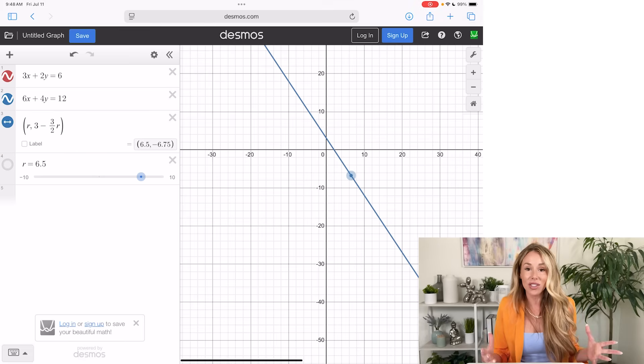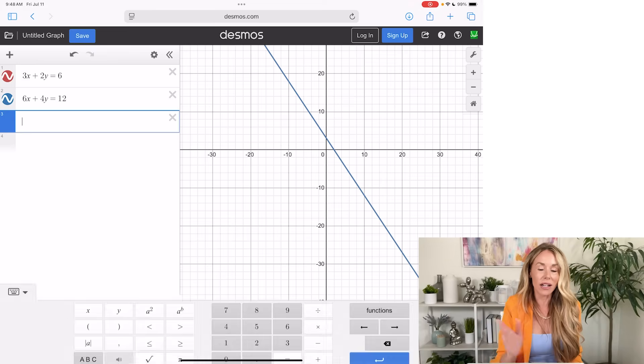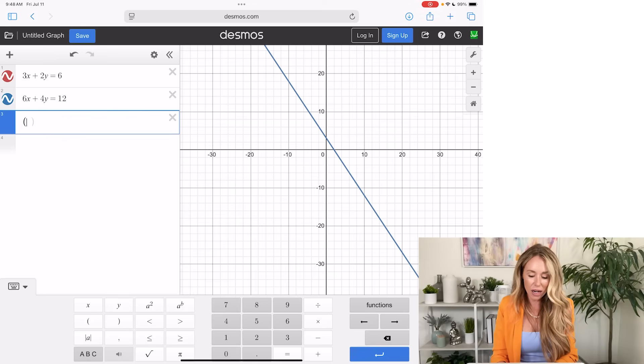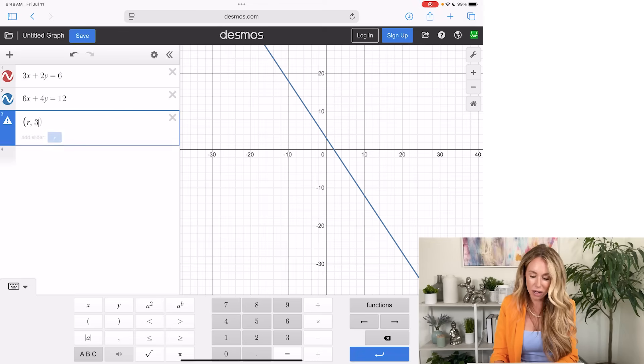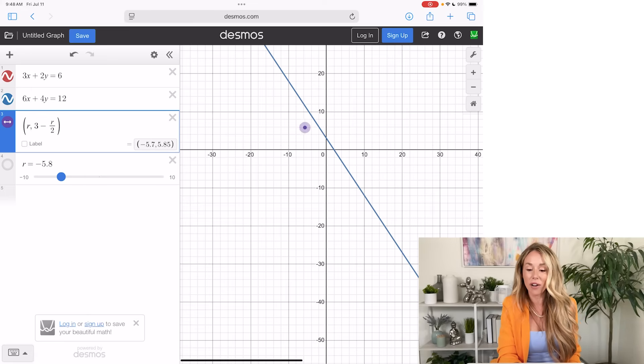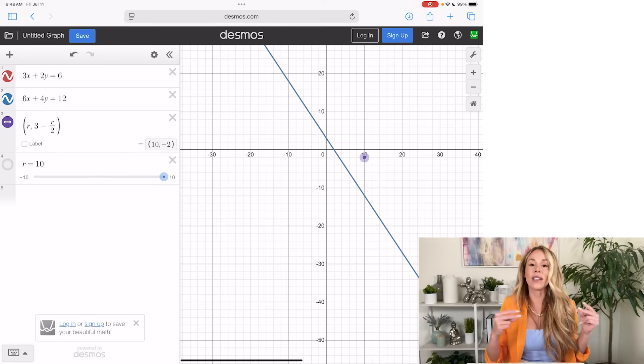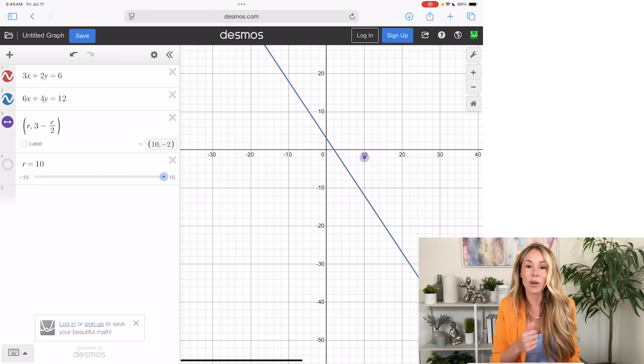That means answer choice A is the correct answer. Now, just so you can see what a wrong answer looks like, I'm going to put in answer choice B. So we have R, 3 minus R over 2. I'll add my slider again. Now check this out. See how the purple dot does not follow the line? So that's how you know the answer is incorrect. So easy peasy. If you see R's in the answers, go ahead and put it in Desmos.